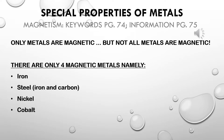In your textbook on page 75 there is a section that can cause a bit of confusion, so I'll put it in simple terms: only metals are magnetic, but not all metals are magnetic. Some metals are not attracted to a magnet. There are only four metals that are magnetic.